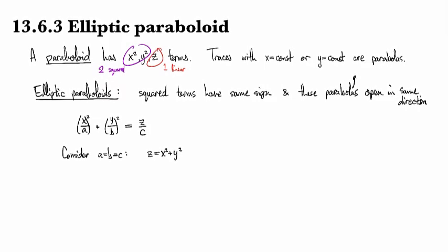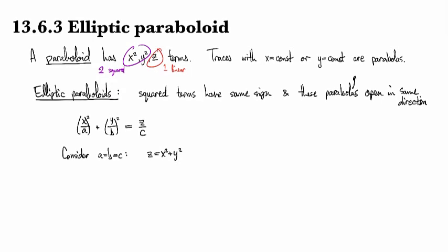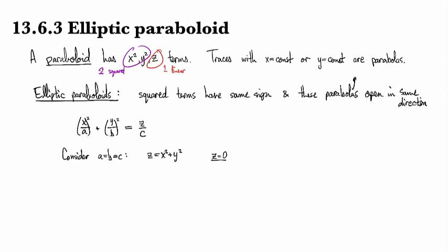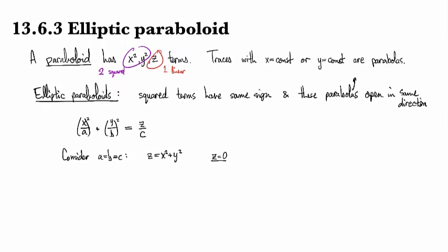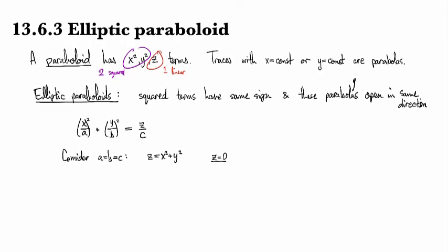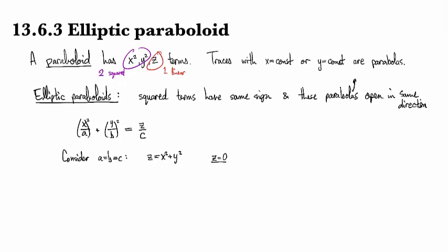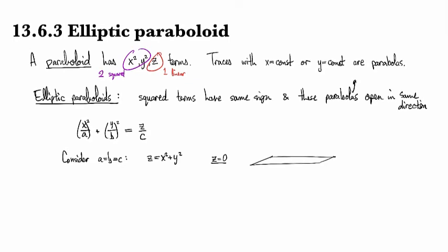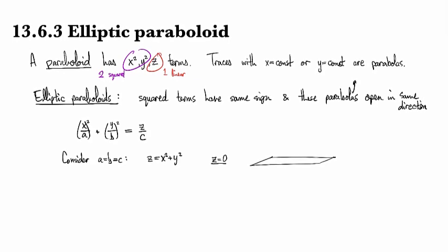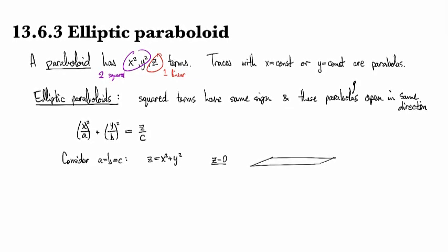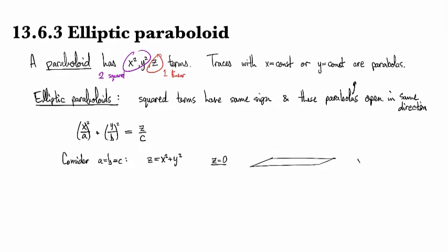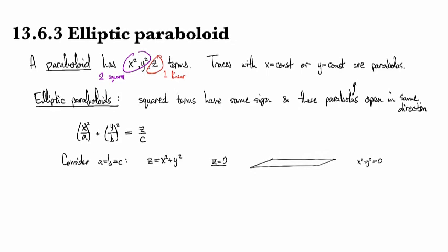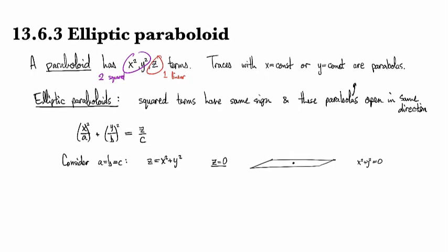So we'll do some traces here. So we can consider z equals 0. So the trace for that one, that's x squared plus y squared equals 0. I'm going to draw the z equals 0 plane, and then in it, I'm going to draw the solution. So x squared plus y squared equals 0. That has only the single solution at the origin.